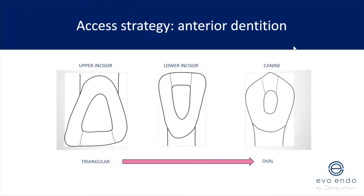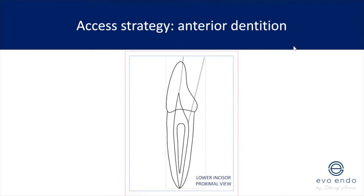Upper incisors have quite prominent pulp horns, so your access cavity should remove all of the coronal pulp tissue — both necrotic and vital — to reduce the incidence of leaving pulpal remnants that cause discoloration long term. You can be more conservative as you move from an incisor to a canine, but remember to eliminate the pulp horns. In older individuals the access cavity would be smaller because the pulp chamber would have calcified with time. Lower incisors get special mention: 40% have a second canal, usually located slightly lingual to the main canal, so always check.